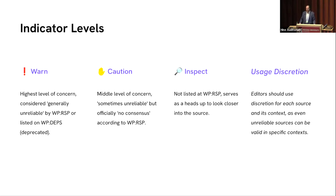Another common outcome is no consensus — the source has been debated repeatedly with arguments on both sides and no agreement. For that, we put up the caution indicator to signal this may be a problematic source. A third category we created, 'inspect,' is more of a neutral designation, often used for web resources that aren't clearly one thing or another. For example, doi.org or archive.org are just containers for other things. The purpose of inspect is to say: take a closer look. Ultimately, it is up to the editor to exercise discretion — the tool can't make the decision for you.